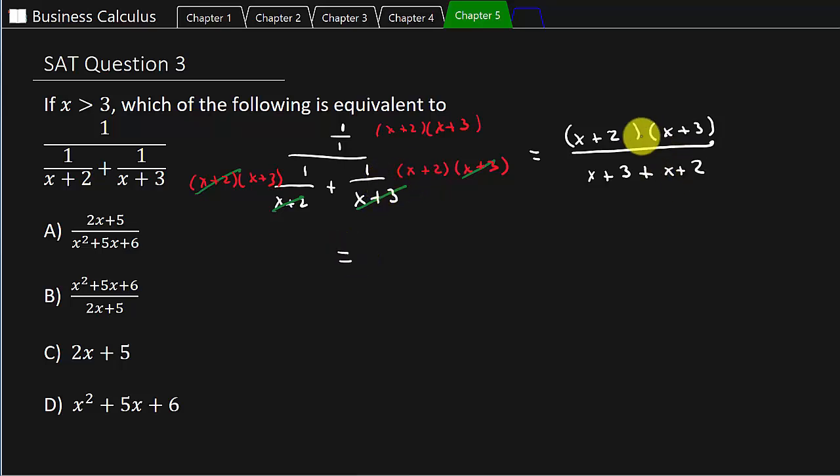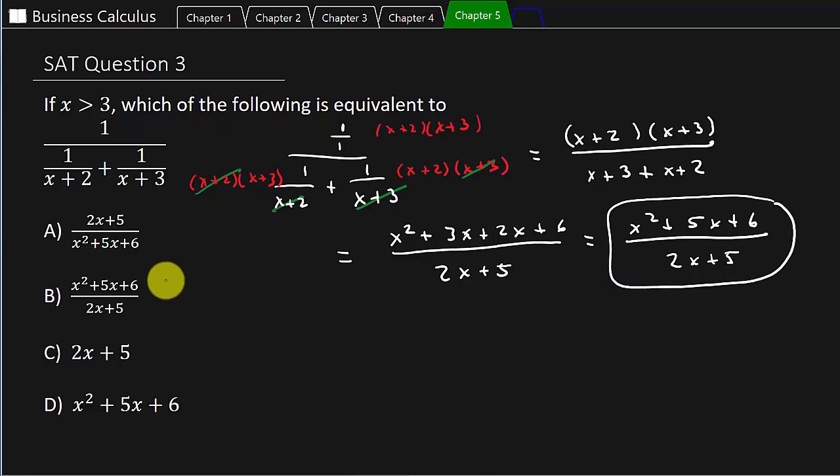And so this is going to give me, if I foil this out, I get x squared plus, so you got first, outside, inside, and last. And then if you combine like terms in the denominator, that's 2x plus 5 and so we're left with x squared plus 5x plus 6 over 2x plus 5. And so you can see here our solution would be B.